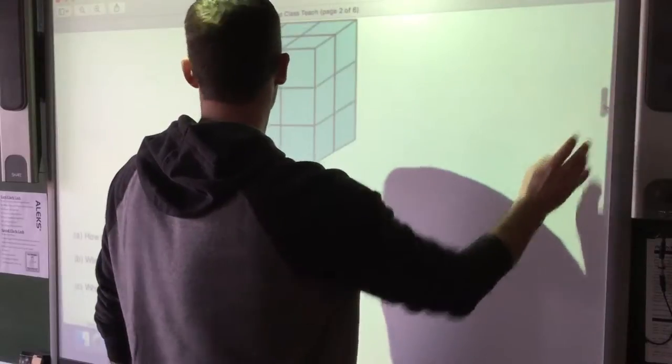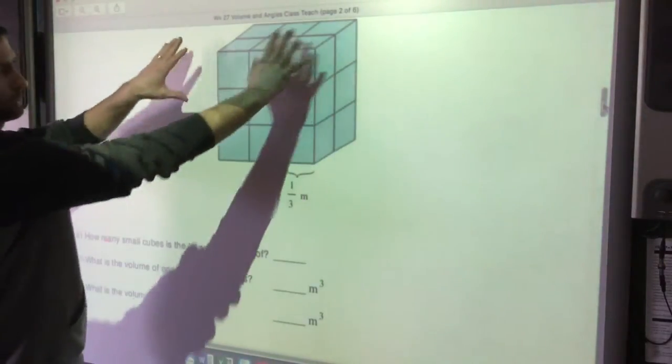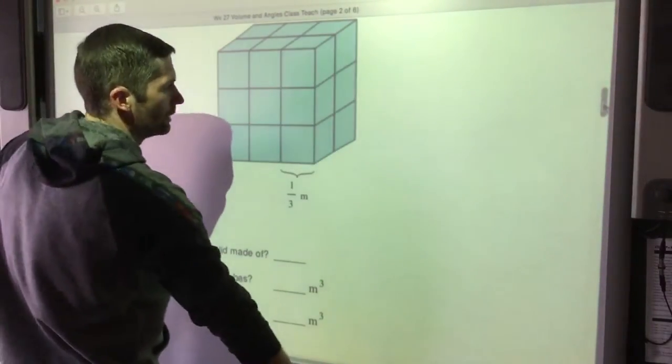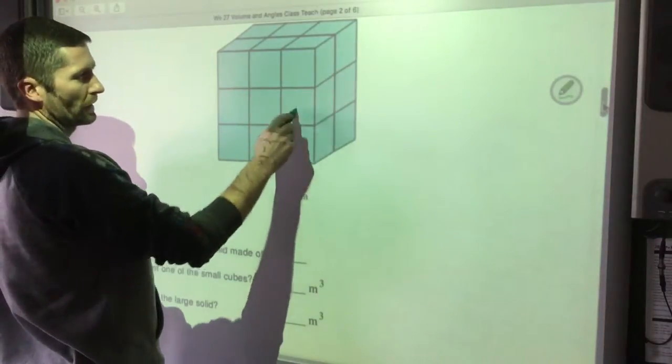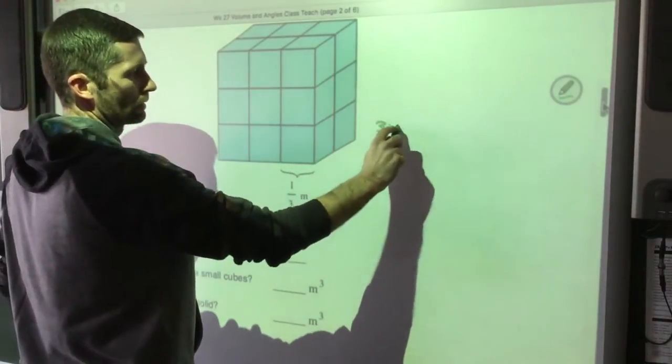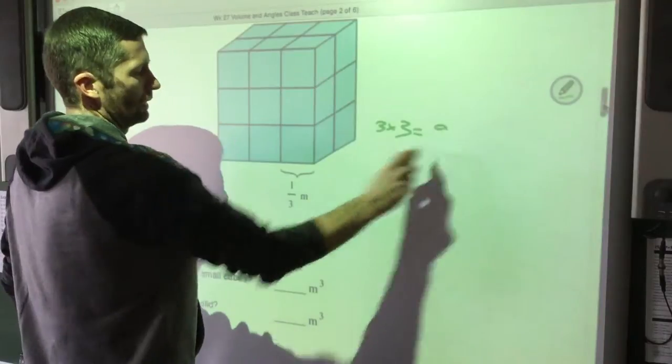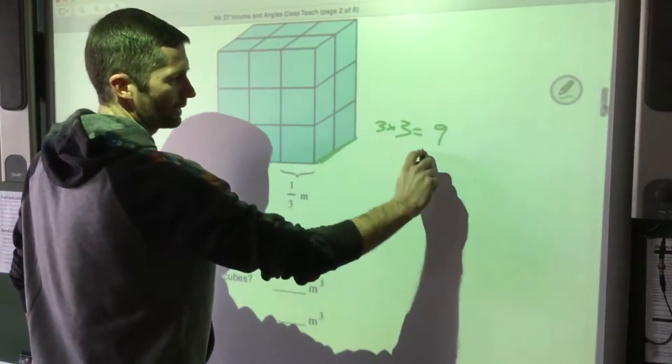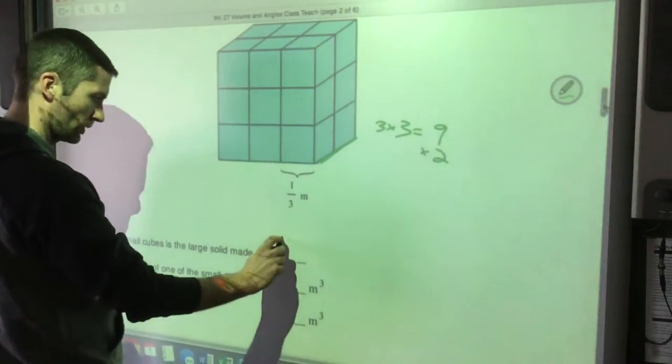How many small cubes is the large cube made of? Okay, so that's kind of what we just looked at. How many small cubes is this large cube made of? Well, one, two, three. Three by three is nine, and then we're two wide, so nine times two, the answer is 18 cubes.